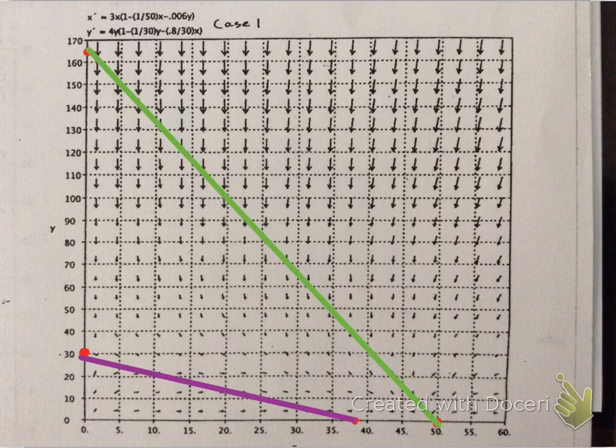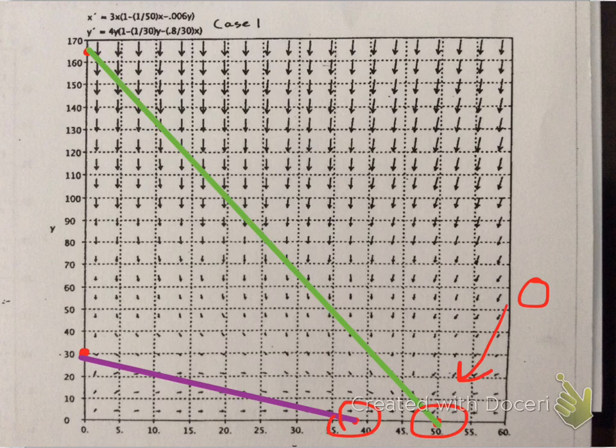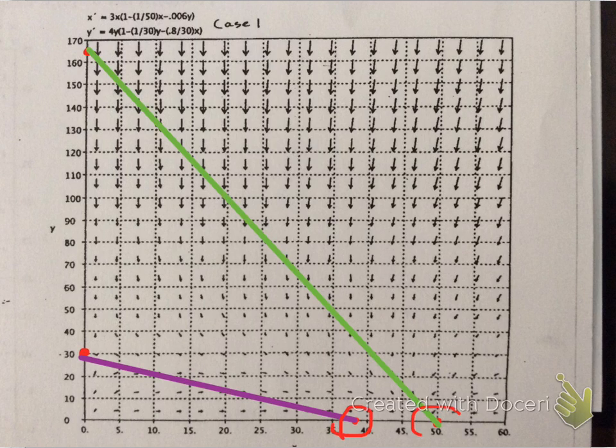So what do these represent here? Pretty much, this is going towards zero, right? So that means, at that point in time, both species pretty much will be extinct. This is pretty much showing how species two will die off first, compared to species one. So that's pretty much what we're trying to determine here, which species will survive.